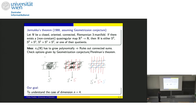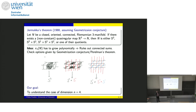Dimension four is interesting in the sense that you actually start to have manifolds where the fundamental group plays no role. In dimensions two and three, most of the game is about understanding the fundamental group. When you go to dimension four, you have the sphere, S2×S2, S2×S2 connected sum with itself, CP2, and so on — manifolds where the fundamental group plays no role. You cannot use the universal cover argument or a volume growth and isoperimetric inequality. So the question is: what can you do?